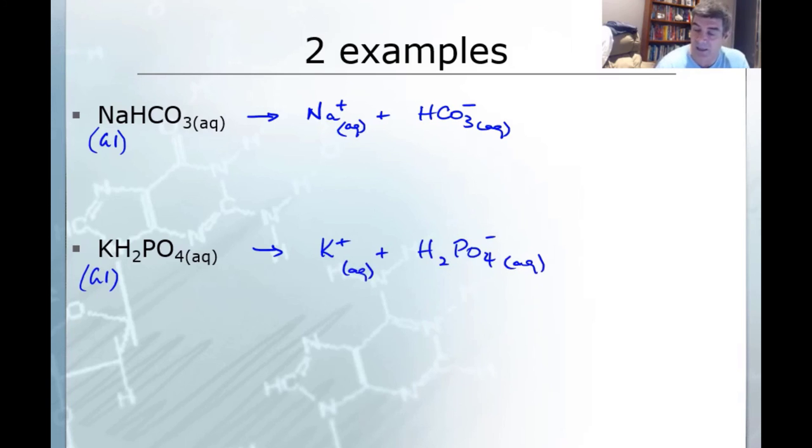So once you've isolated each of these two then what you can do is then go through the sequence that I just showed you in the previous couple of slides to show that these ions in solution can act as both proton donors and proton acceptors and that's our definition of amphiprotic species.